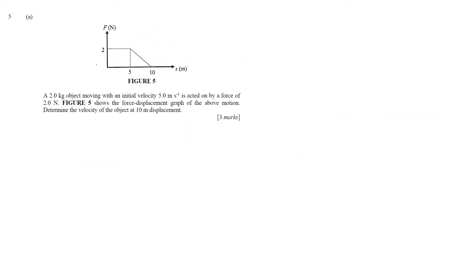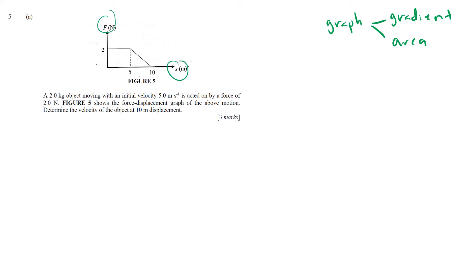Now, question number 5a — three marks. This is a graph of F against s. When you see a graph question, don't panic. From a graph you can only extract two pieces of information: the gradient or the area under the graph. From chapter one to chapter five, there are only two force graphs you've learned. For F against t, the area gives impulse. For F against s, the area under the graph gives you work.